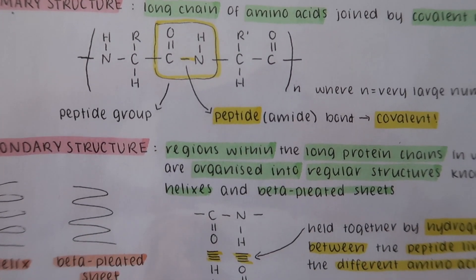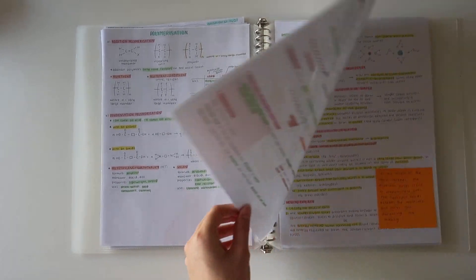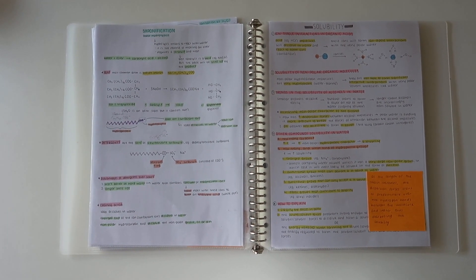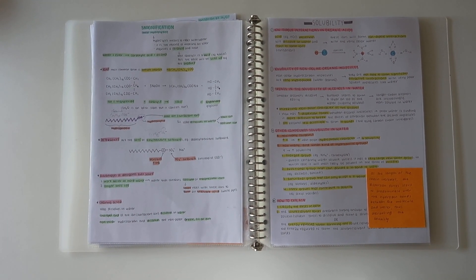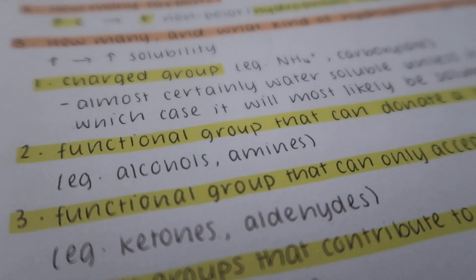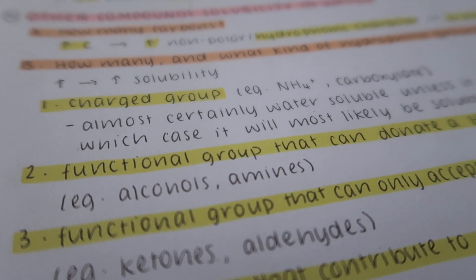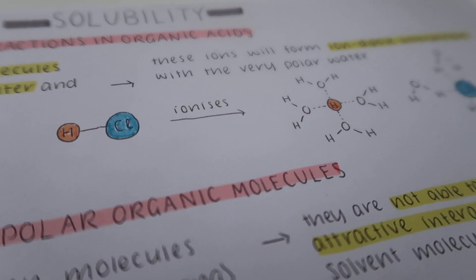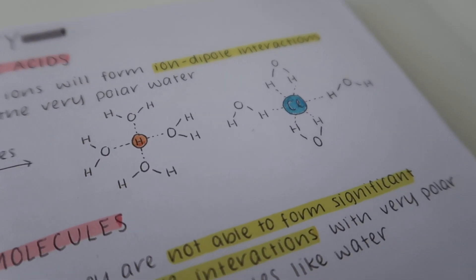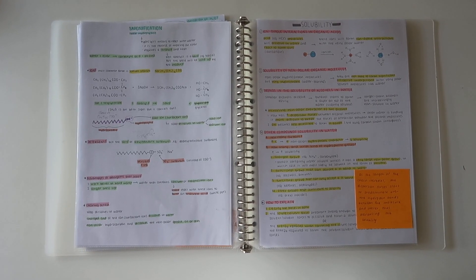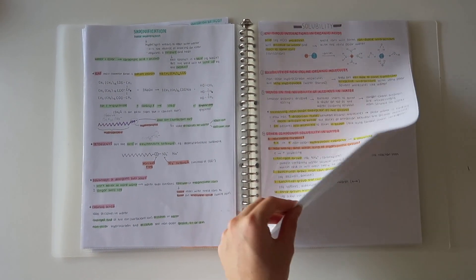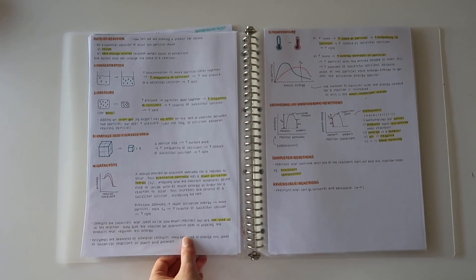Continuing on, we have saponification, and then a page on solubility. That was one of the smaller topics — kind of a little analysis task rather than a main topic — so I just summarized all the important information onto one page. And there it is for solubility, with a sticky note added as well.